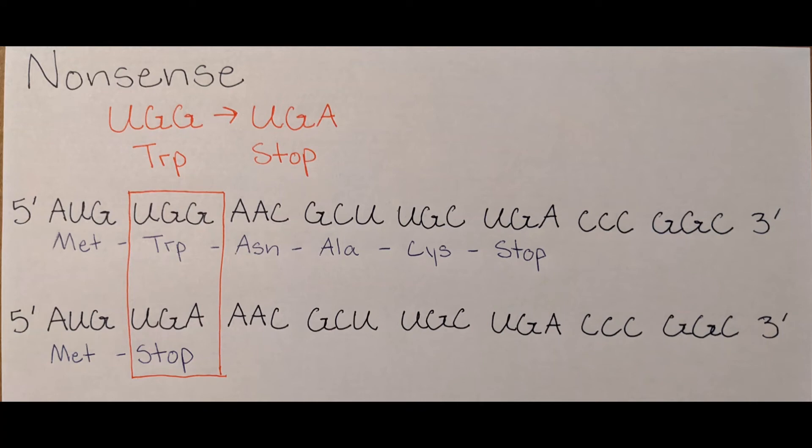A nonsense mutation is the change of a base that results in a stop codon. This early stopping of translation results in a protein that is abbreviated and incomplete, often making it non-functional.